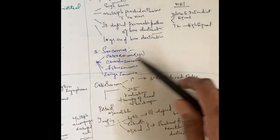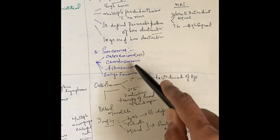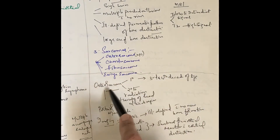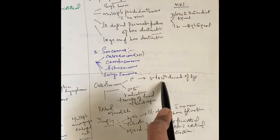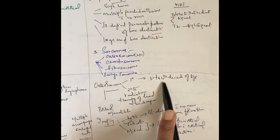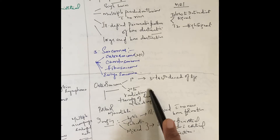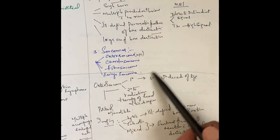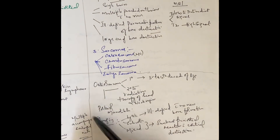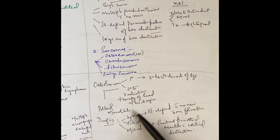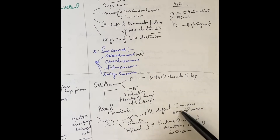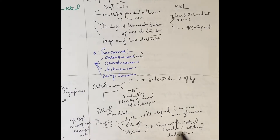Sarcomas include osteosarcoma, chondrosarcoma, fibrosarcoma, and Ewing sarcoma. Osteosarcoma is the most common. Primary osteosarcoma occurs in the second to fourth decade of life; secondary osteosarcoma is related to prior radiation therapy to the head and neck region. The posterior mandible is most commonly involved. Imaging shows ill-defined lesion with sclerotic and mixed pattern, sunburst periosteal reaction, and cortical destruction.